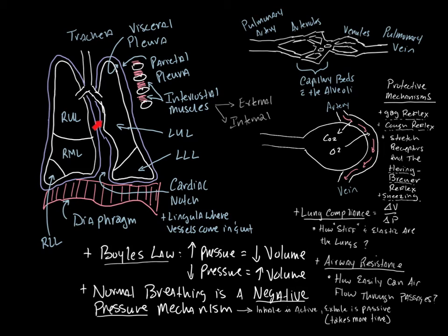There is a section where the pulmonary arteries and veins come in and out of the lungs, creating an opening in the pleura. That section is known as the lingula, where the pleura opens up and allows the great vessels to enter and exit the lungs — generally in one area for each lung with different openings for the various vessels.